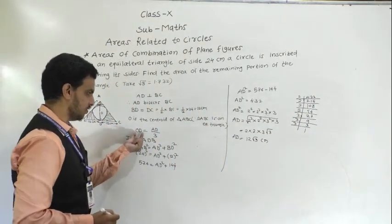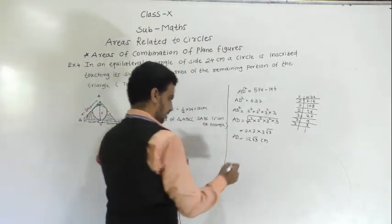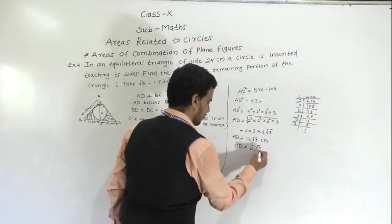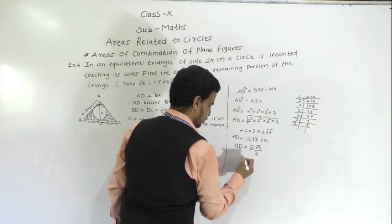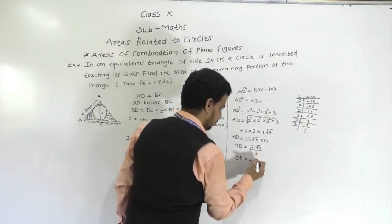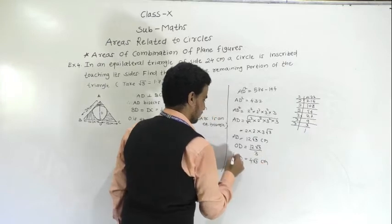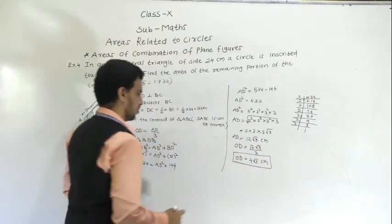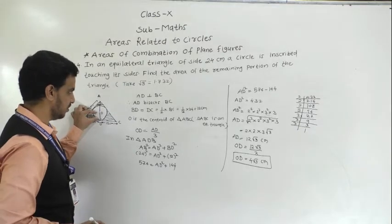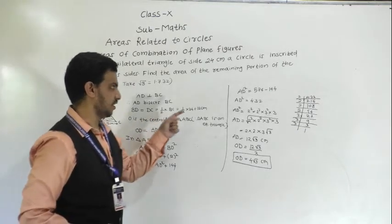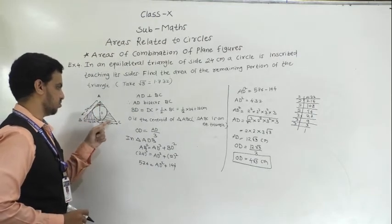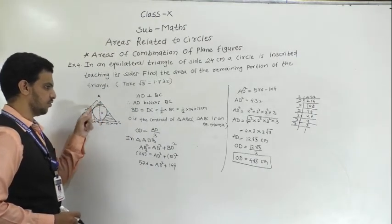Now OD = AD/3 = 12√3/3 = 4√3 cm. This OD is the radius of the inscribed circle. So area of remaining portion = area of triangle ABC minus area of circle.